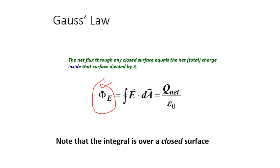What Gauss law is saying is that phi E is equal to the total charge enclosed divided by epsilon zero. This flux is equivalent to E dot dA, where E is the electric field and dA is the area element. This gives the idea of flux, and this is also equal to Q net upon epsilon zero.